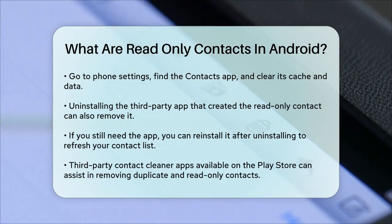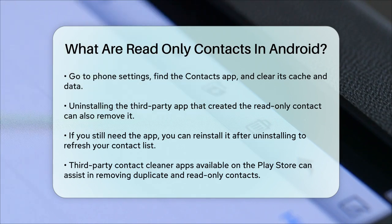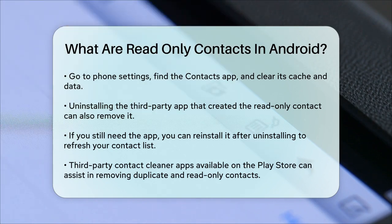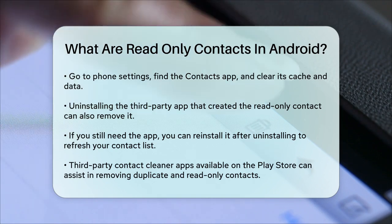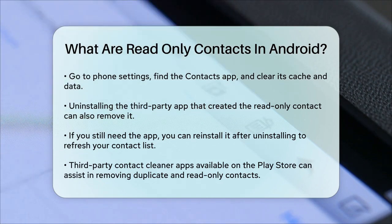In summary, read-only contacts are managed by third-party apps, but you can remove them by unlinking them, using the Google Contacts app, clearing the app's cache and data, uninstalling the third-party app, or using a contact cleaner app. These methods should help you tidy up your contact list and get rid of those read-only contacts.